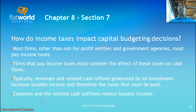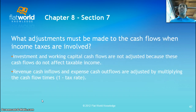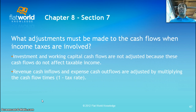Typically, revenues and related cash flows generated by an investment increase taxable income, and therefore taxes must be paid. Expenses and related cash outflows reduce taxable income. Investment and working capital cash flows are not adjusted because they do not affect taxable income. Revenue cash inflows and expense cash outflows are adjusted by multiplying the cash flow by one minus the tax rate. So if the tax rate is 40%, you multiply by 0.60.